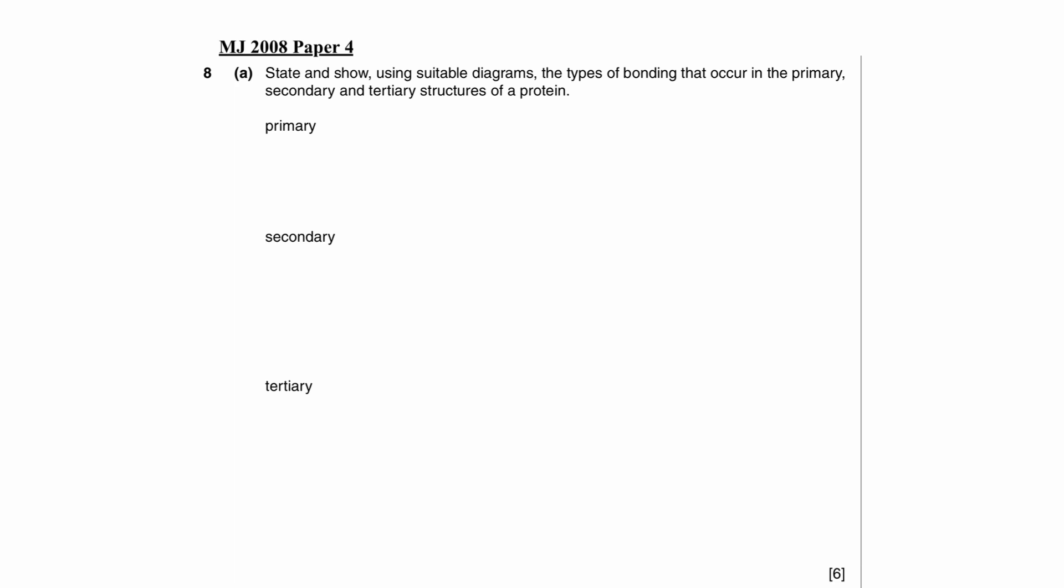This question wants us to use suitable diagrams to show the type of bonding that occur in primary, secondary and tertiary structure of protein. So in primary structure of protein, amino acids were linked together to give us a long chain polymer with peptide bond. So we have to show peptide bond in the diagram. Peptide bond is a type of covalent bond.